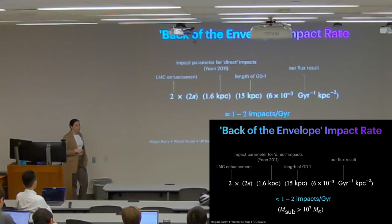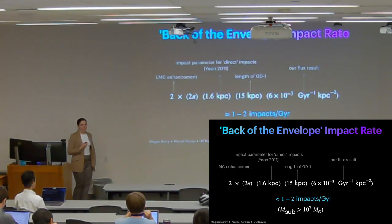To get an estimated rate for our medium mass range of one to two impacts per giga year. So again, not a lot but not nothing. And this, based on our back of the envelope calculation, should be a low rate only considering direct impacts, as you can imagine a more glancing blow could still leave some gap in a stellar stream.